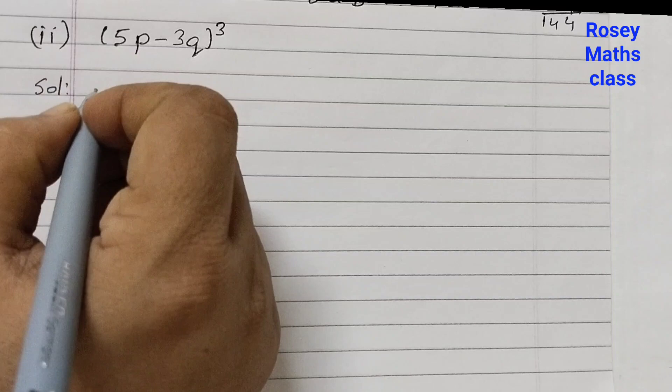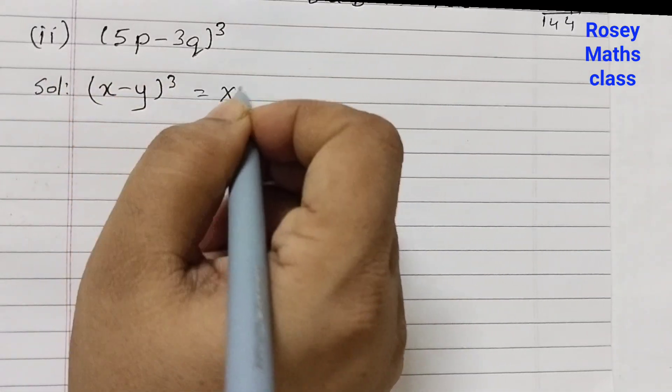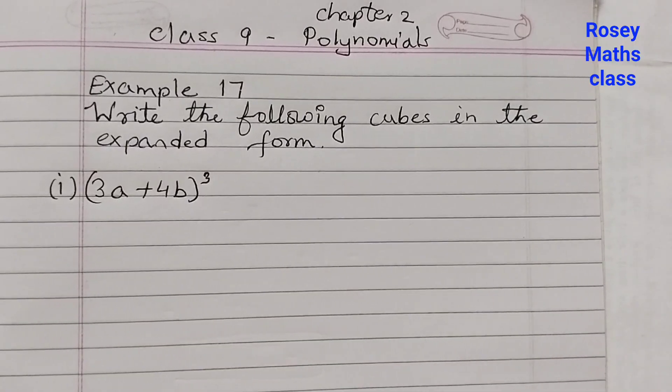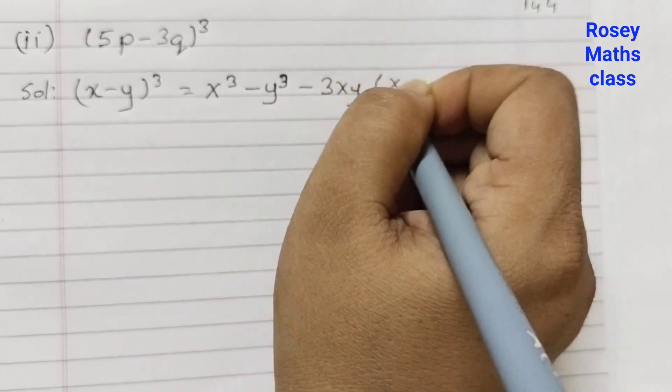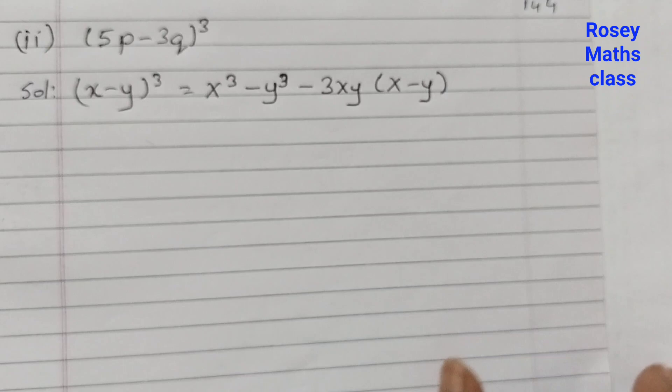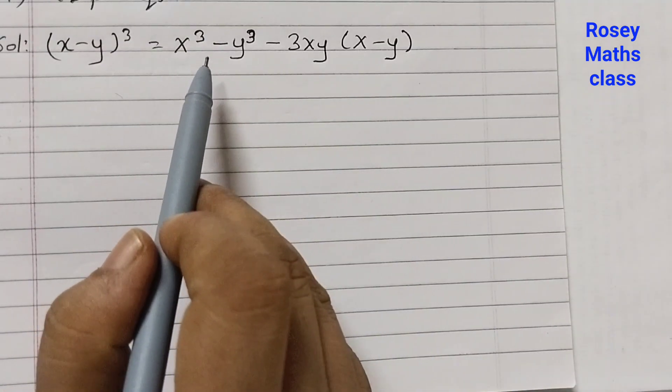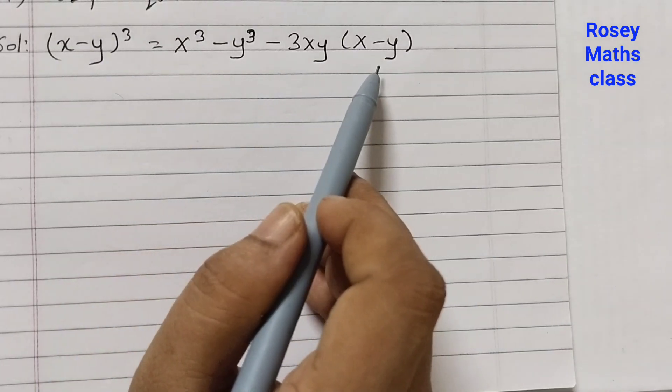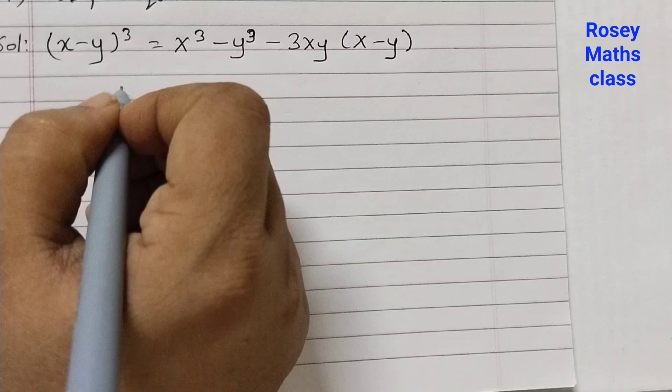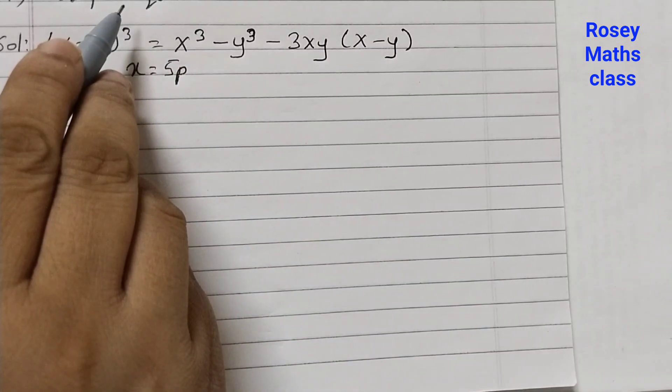For this, we are going to use the identity of (x - y)³, which is x³ - y³ - 3xy(x - y). So this is very much similar to the first one. Here we had plus sign. For the second one, we have all minus signs: x³ - y³ - 3xy(x - y). Here x is 5p and y is 3q.